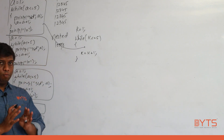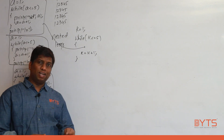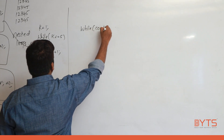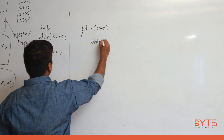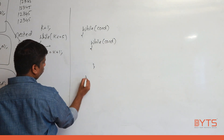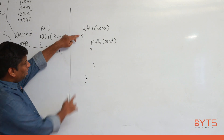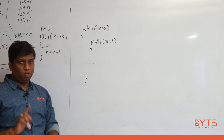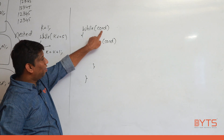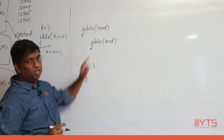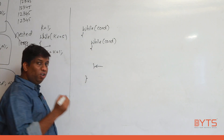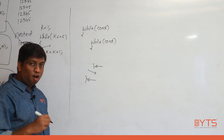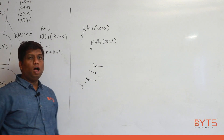Before discussing nested loops further, let's cover the syntax. The syntax is: while (outer condition) { while (inner condition) { } }. One loop present inside another loop is called a nested loop. The inner loop is the one inside; the outer loop is the one outside. We also refer to the outer loop condition, inner loop condition, end of inner loop, end of outer loop, out of inner loop, and out of outer loop.